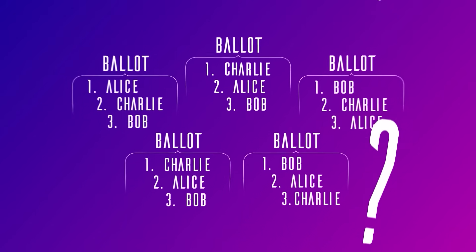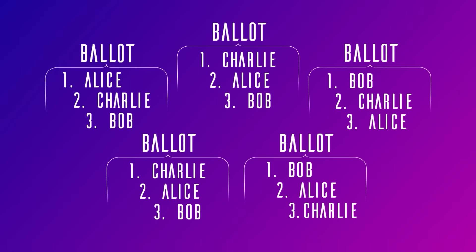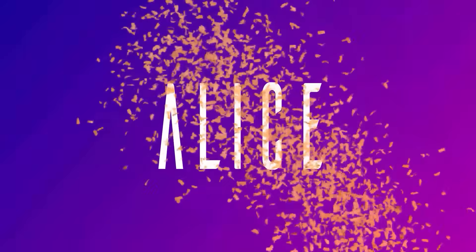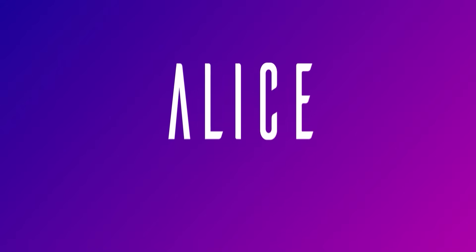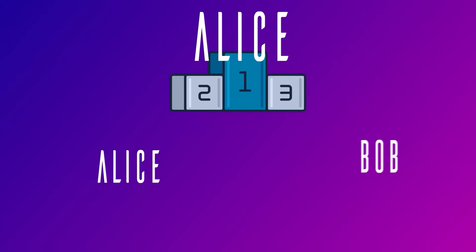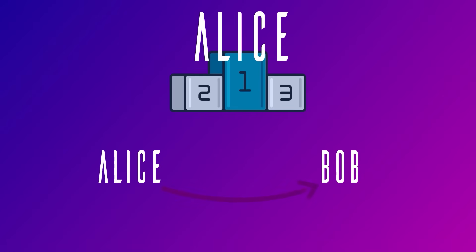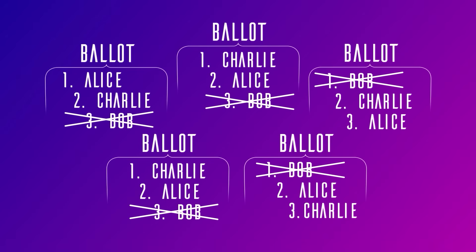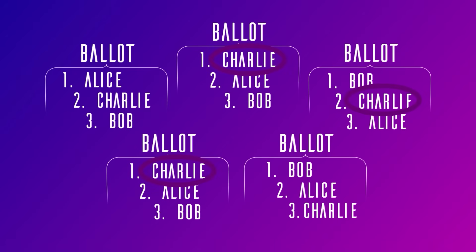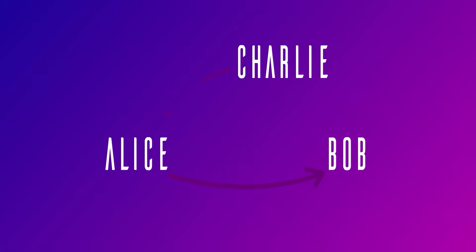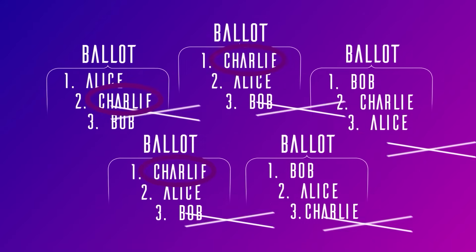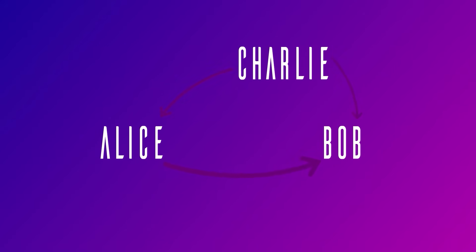For example, consider an election with three candidates and five voters. If we take the pair Alice and Bob, three of five voters think Alice is better than Bob, so Alice would win between the two of them. We represent that by drawing an arrow pointing from Alice to Bob. For the next pair, Alice and Charlie, three of five voters prefer Charlie, so we draw an arrow from Charlie to Alice. For the last pair, Bob and Charlie, Charlie beats Bob by three voters, so we draw an arrow from Charlie to Bob.